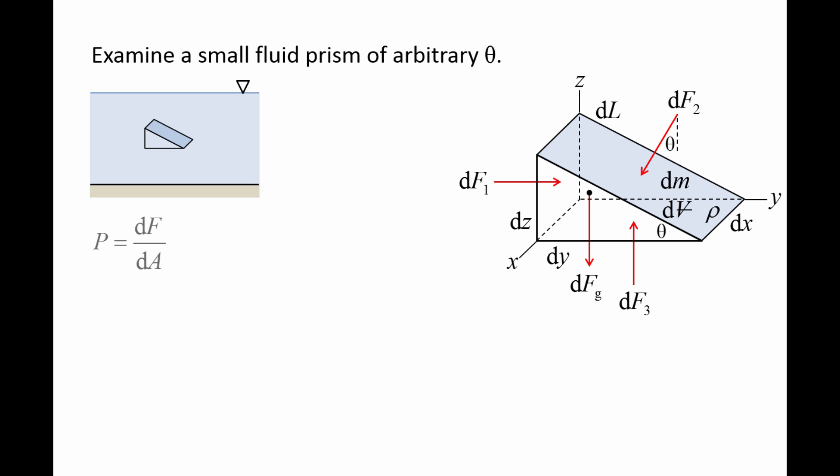Since pressure is equal to force per area, we can rewrite dF as pressure times dA. So dF1 becomes p1 times the area dx times dz, dF2 becomes p2 times the area dx times dl, and dF3 becomes p3 times the area dx times dy.